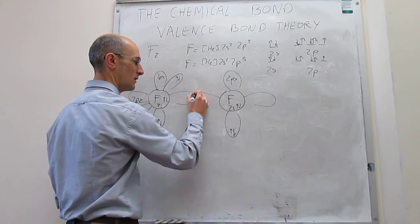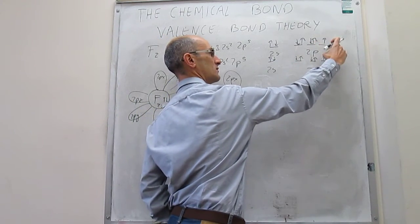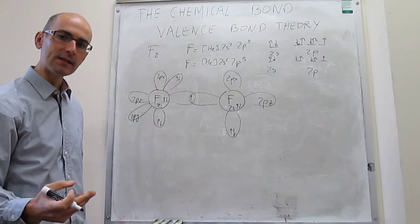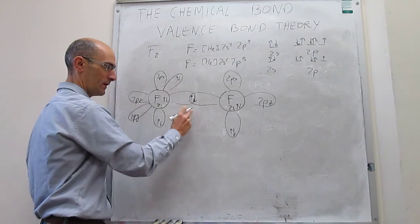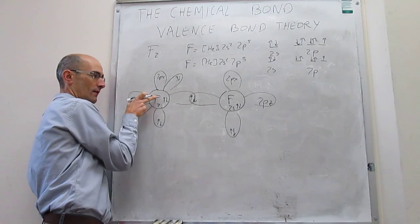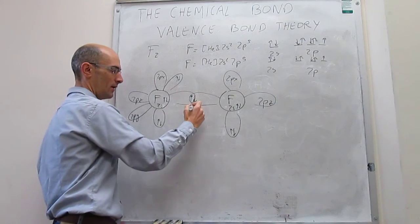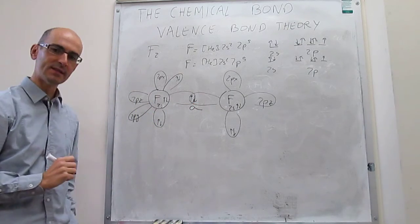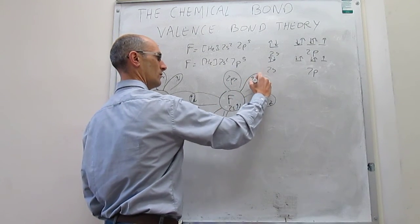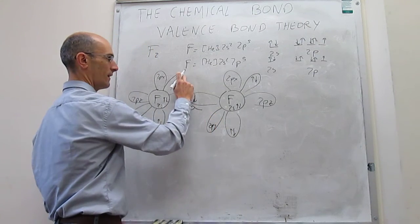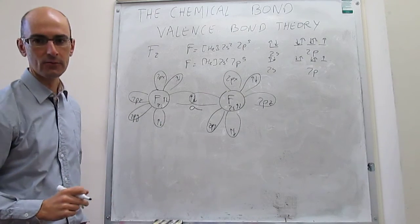The overlap between the two singly occupied 2pz orbitals occurs right along the internuclear axis — it's a head-on overlap — so this is a sigma bond. The 2py orbitals are doubly occupied, so there is no overlap between them either, as there would be too many electrons in the same region of space.